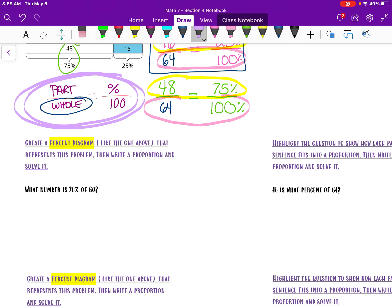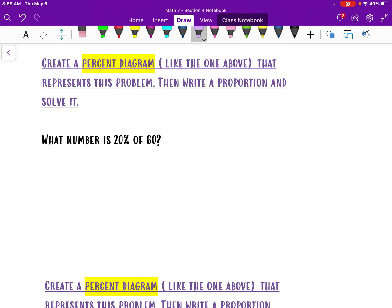So when you think about creating the percent diagram, like in this question, you are going to give yourself a proportion. We're going to do 100 down here. Now, in our problem, we are given 20%. So I know because that's a percentage, it's got to go here. Now, when I look at this, it says what number is 20% of 60.